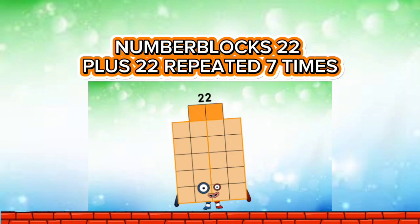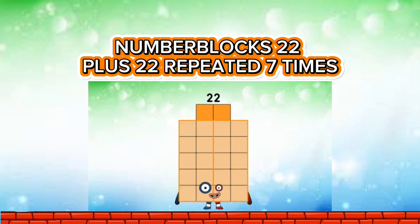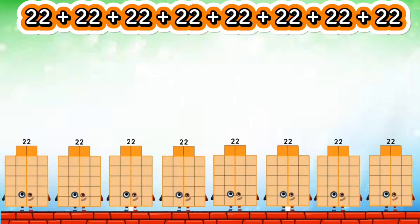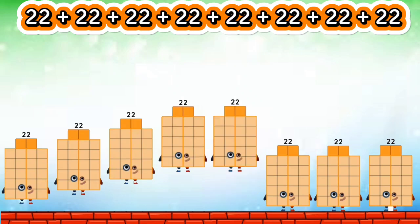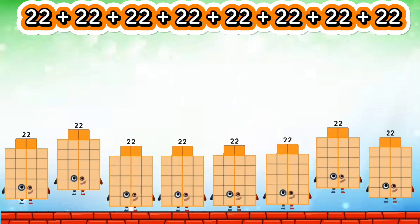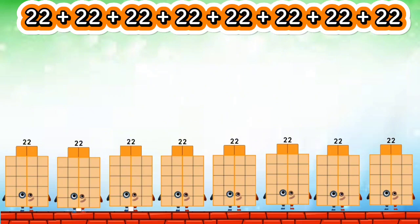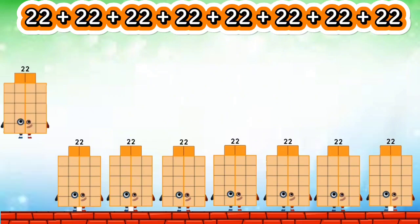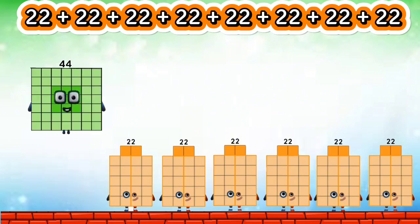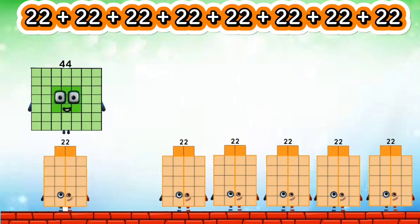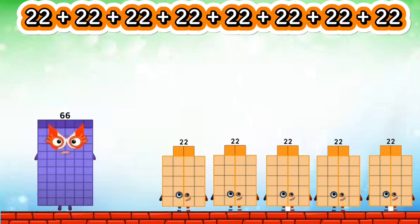Number blocks: twenty-two plus twenty-two, repeated seven times. Four hundred forty-four. Fifteen plus forty-four: four hundred sixty-seven.